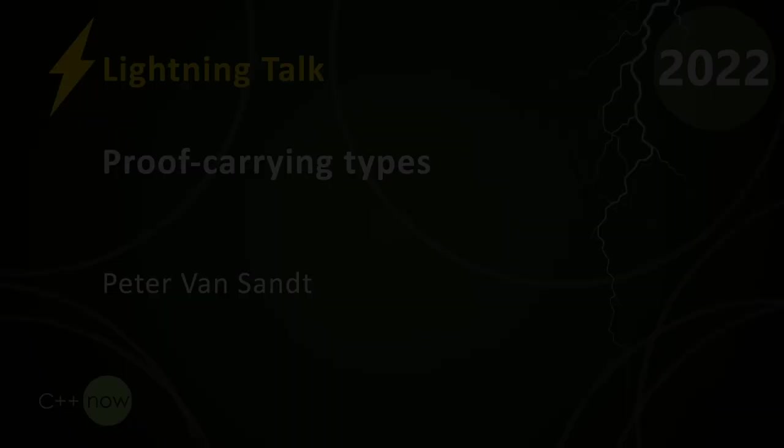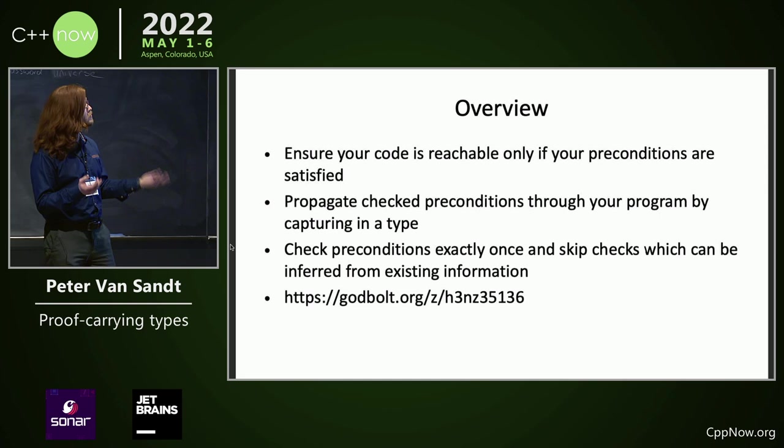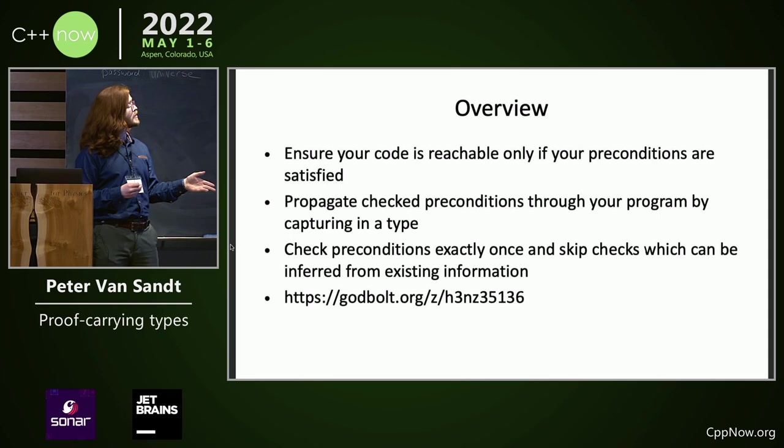From an application perspective, you want to ensure that your code is reachable only if your preconditions are satisfied. From a global program perspective, you want to propagate checked preconditions through your program by capturing them into your type, and you want to check your preconditions exactly once and skip checks which can be inferred from existing information. We can infer non-negative from positive.